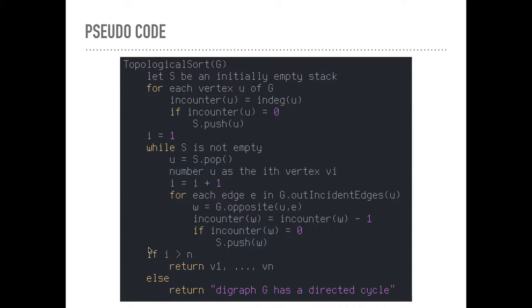And at the end of it all, if i is greater than n, then we have a good topological ordering. If not, we will return that there's a directed cycle.